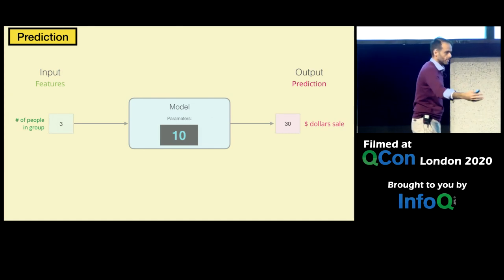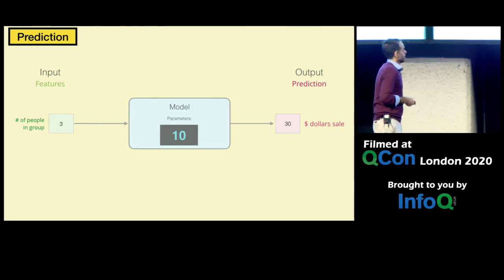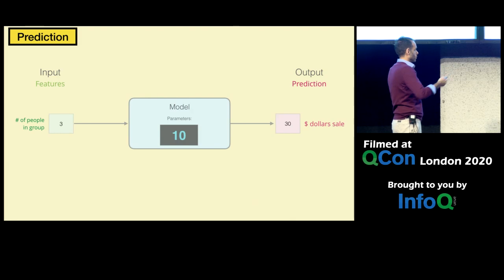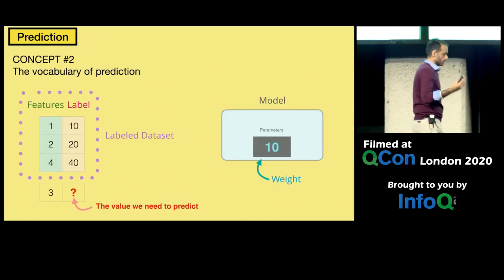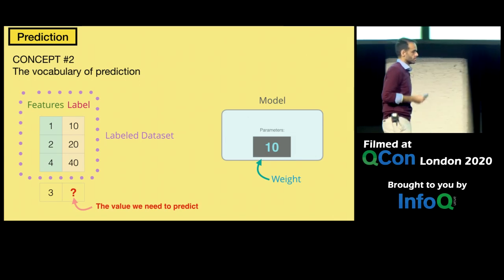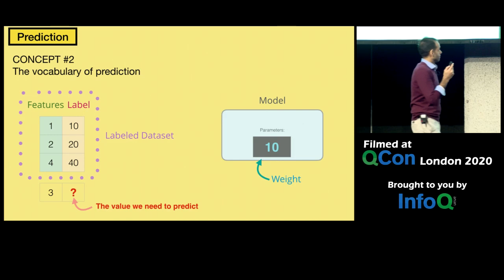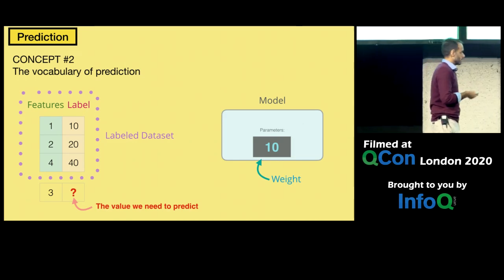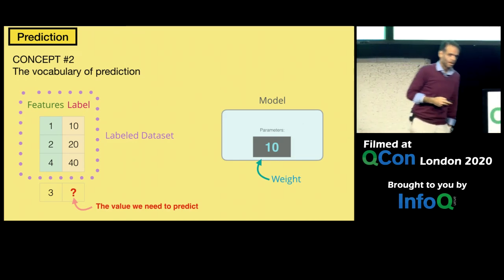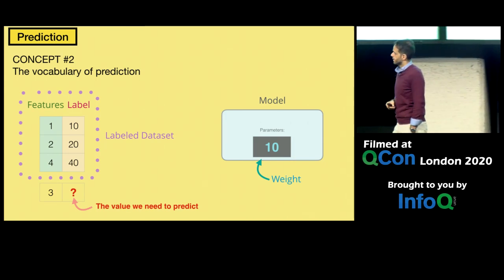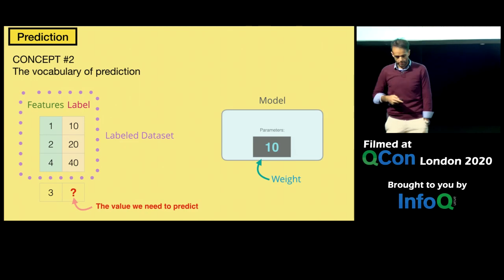If you leave the talk right now, you can claim that you know machine learning because this is the basic trick at the heart of it. Everything else is just taking it one step ahead — how to do this with images, how to do this with text, how to clean the data. So concept number two is the vocabulary of machine learning: features, labels, the value we want to predict, a model that makes predictions, and a weight.